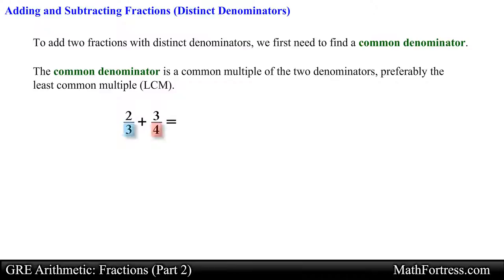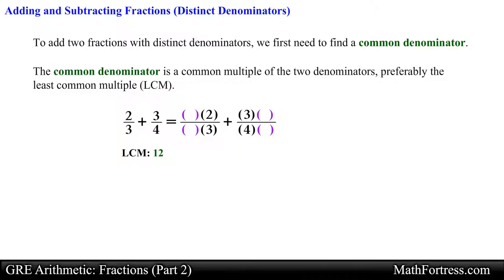In this example, notice that both fractions have different denominators. So we first want to find the least common multiple of 3 and 4. In this case the least common multiple is 12. We now want to use the first property of fractions that we learned in the previous video and multiply each fraction by an integer so that the denominator equals this common multiple. In order to obtain 12 as the denominator on the fraction on the left we want to multiply 3 by 4. In order to obtain an equivalent fraction we need to do the same to the integer on the numerator.